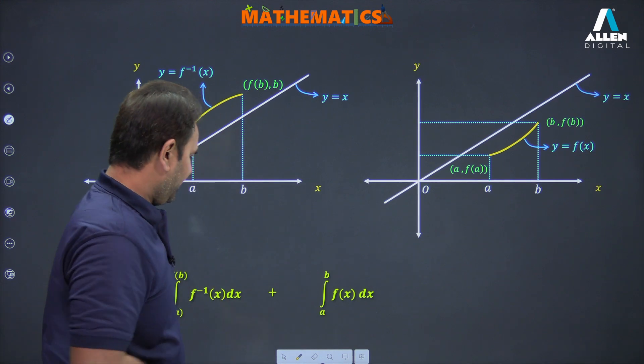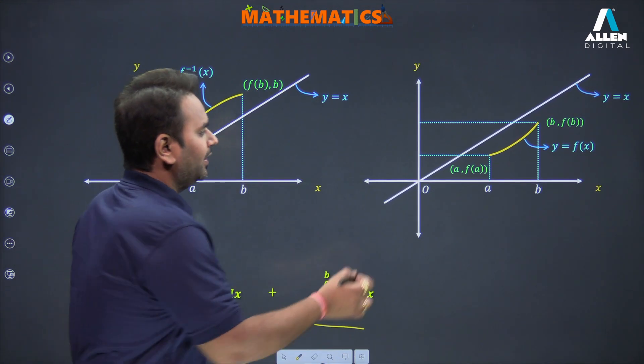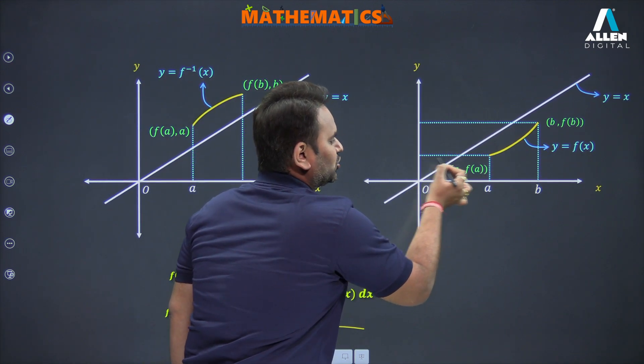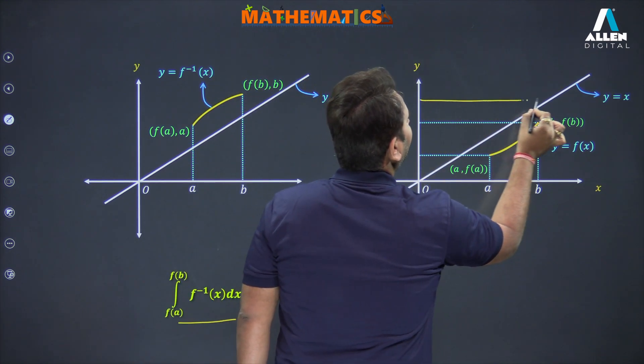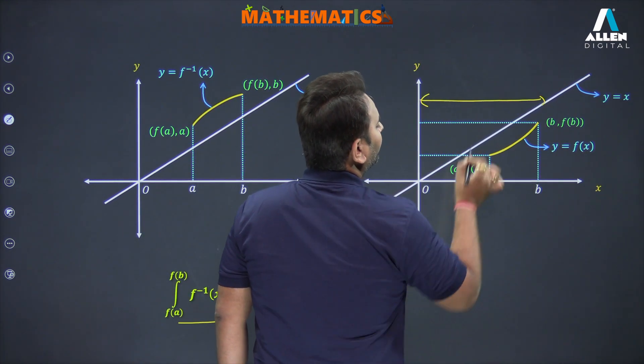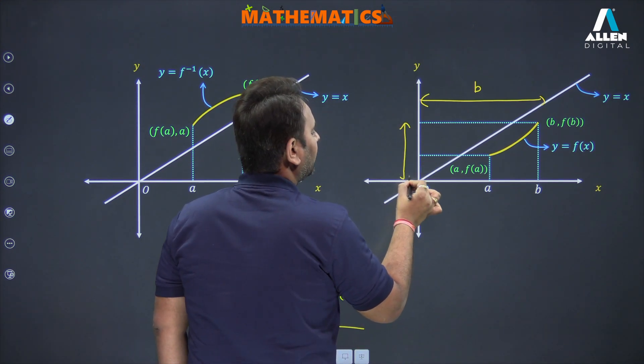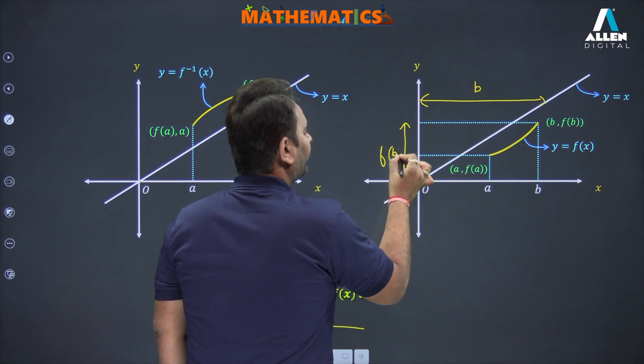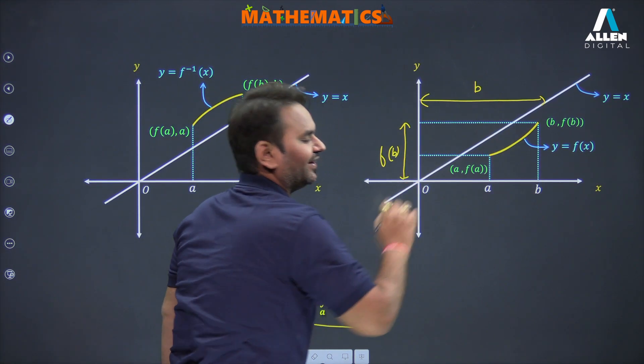If you talk about the larger rectangle, the length from here to here will be b, and if I talk about the height from here to here, you'll see f(b). So the area of this rectangle will be b times f(b). Which rectangle? The larger rectangle.